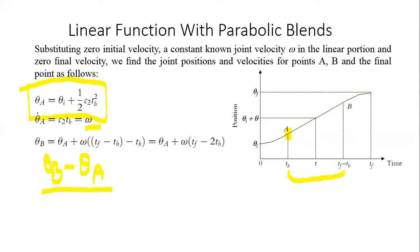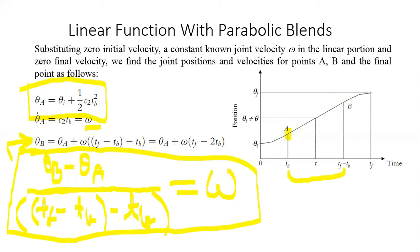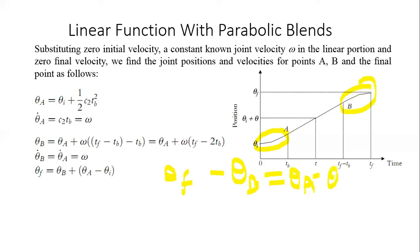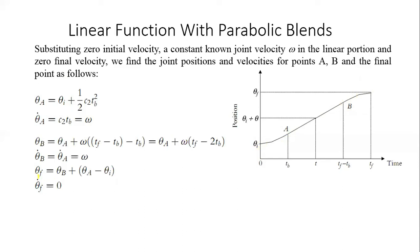At point B, the position can be expressed as (θ_b − θ_a) divided by the time difference from A to B, which gives the angular velocity ω. This leads to θ_b = θ_a + ω·(t_f − t_b − t_b), which simplifies to θ_b = θ_a + ω·(t_f − 2·t_b). Taking the derivative gives θ̇_b = θ̇_a = ω. Since the acceleration in the first and last parabolic segments is constant and equal, we have θ_f − θ_b = θ_a − θ_i, and θ̇_f = 0.